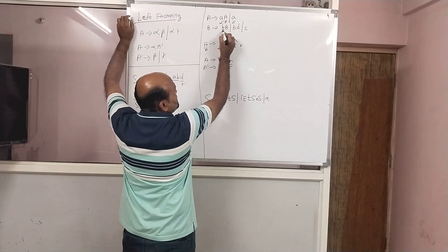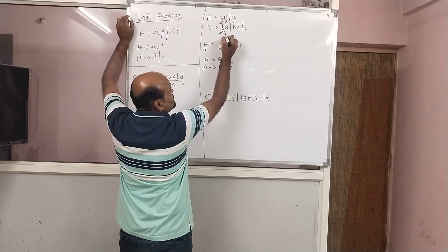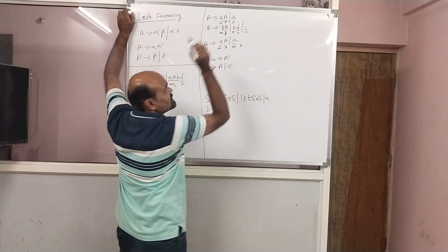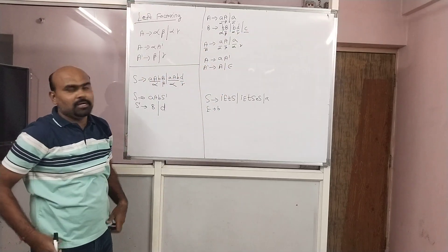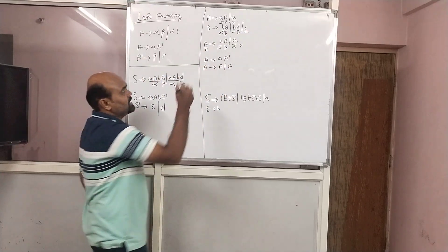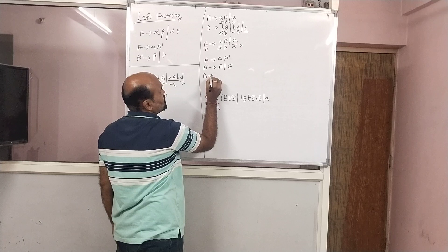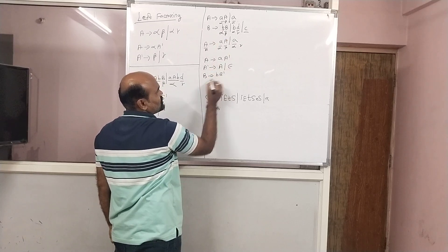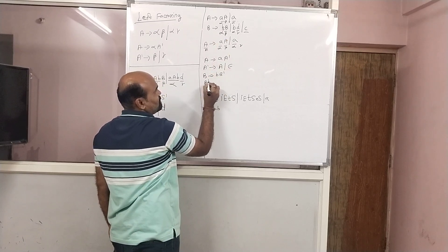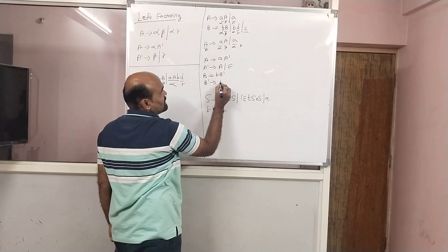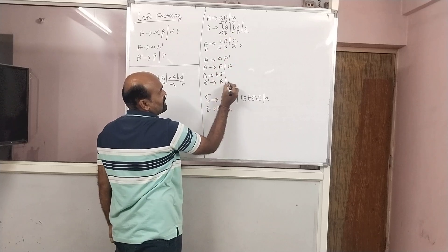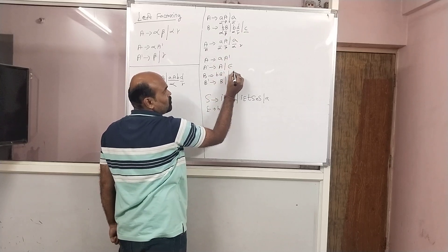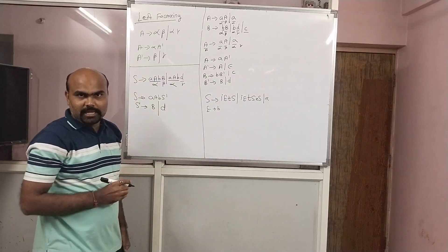Again for this: this is alpha, this is beta, this is alpha, this is gamma, but it is not related to alpha or beta. So here we write alpha A-dash, that is B-dash. B-dash gives beta gamma — beta is B, gamma is D — and the unrelated part is written as it is.